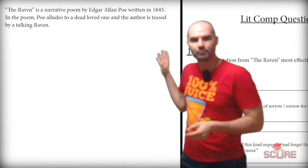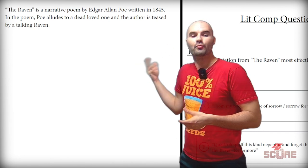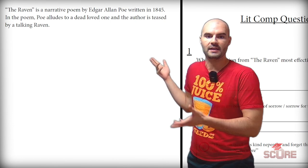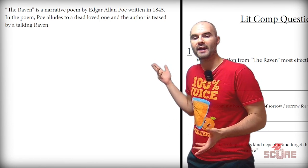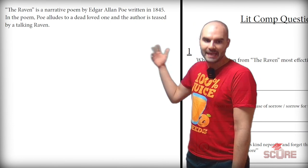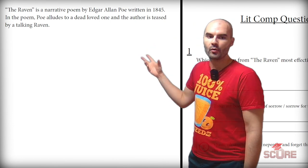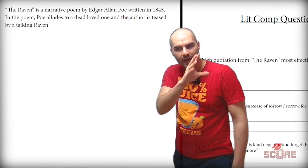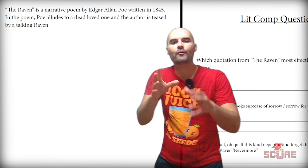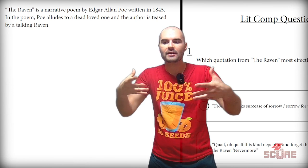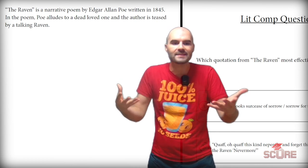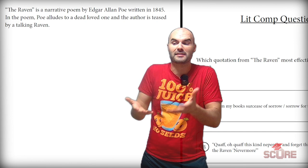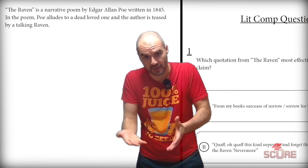You'll see here that it gives a brief introduction to the poem. The Raven is a narrative poem by Edgar Allan Poe, written in 1845. And then we get the claim. In the poem, Poe alludes to a dead loved one, and the author is teased by a talking raven. All we're looking for is a line from this poem that includes both of these concepts — that he mentions a dead loved one, and that he's being teased by a raven.